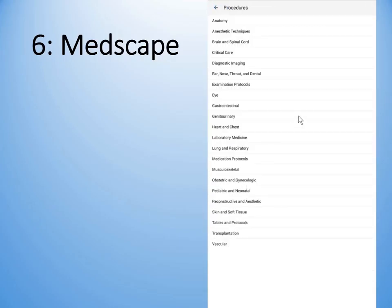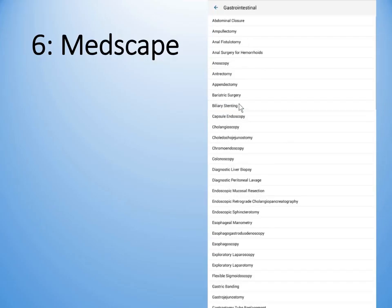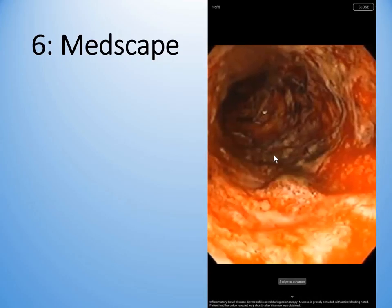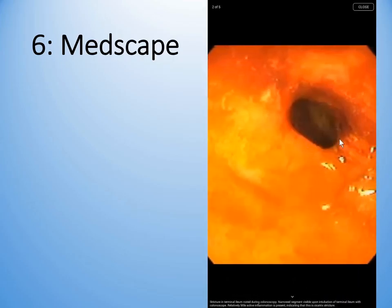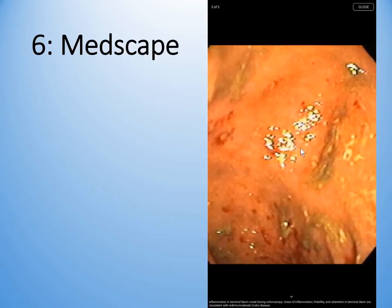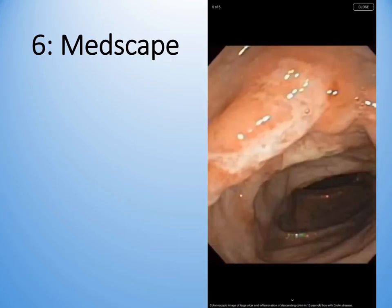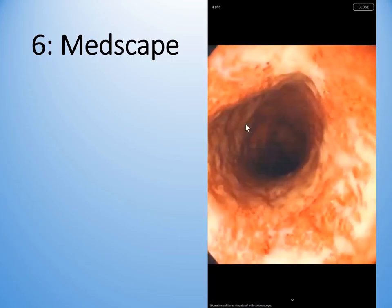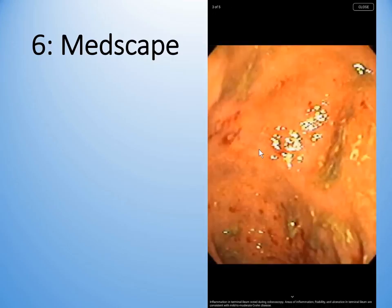If we look at procedures — let's tackle gastrointestinal procedures and have a look at a colonoscopy. Check out their media gallery and we can see a number of conditions they show us, from a large ulcer to ulcerative colitis. My scrolling isn't all that good, but here's inflammation of the terminal ileum.